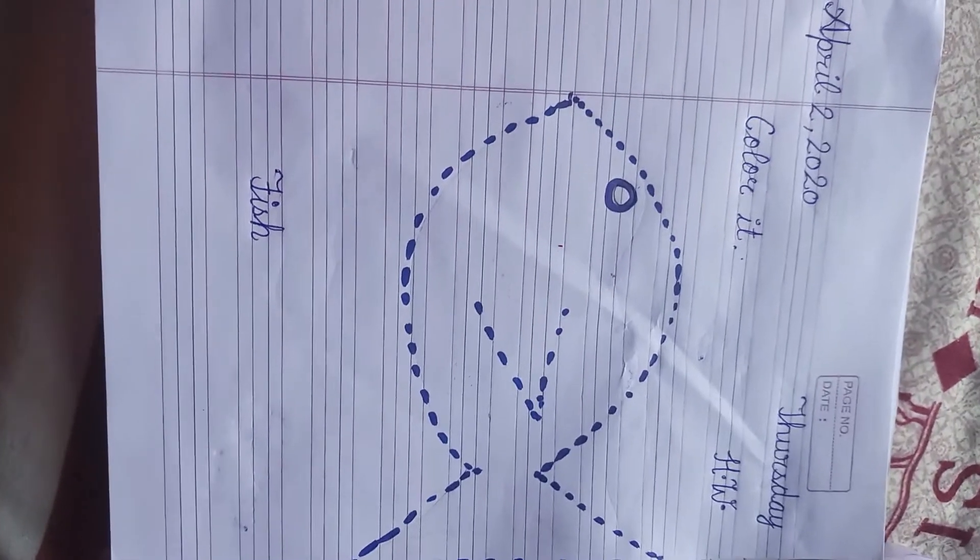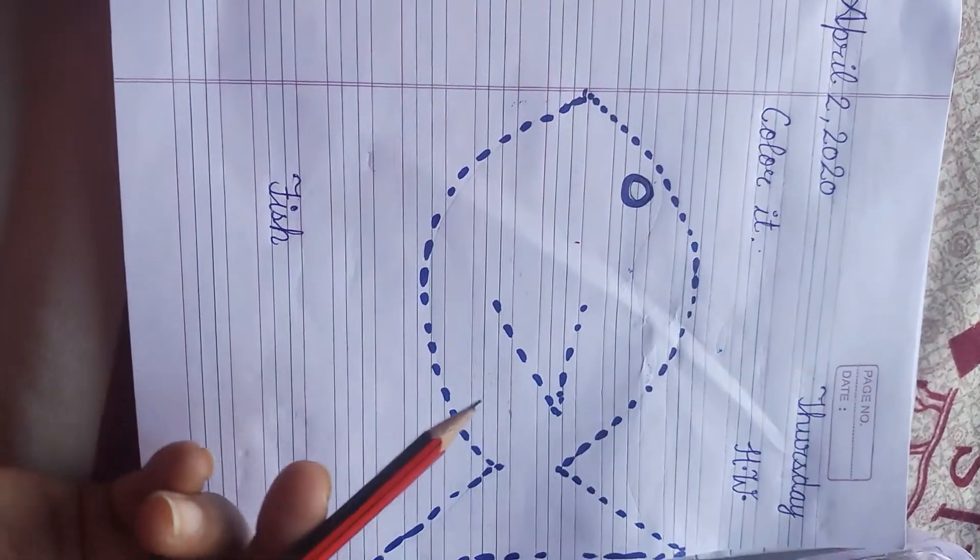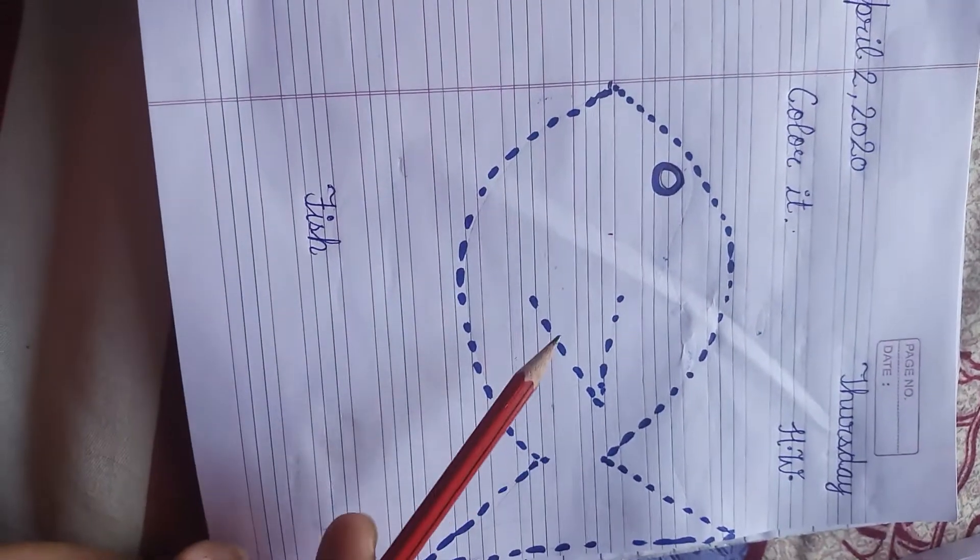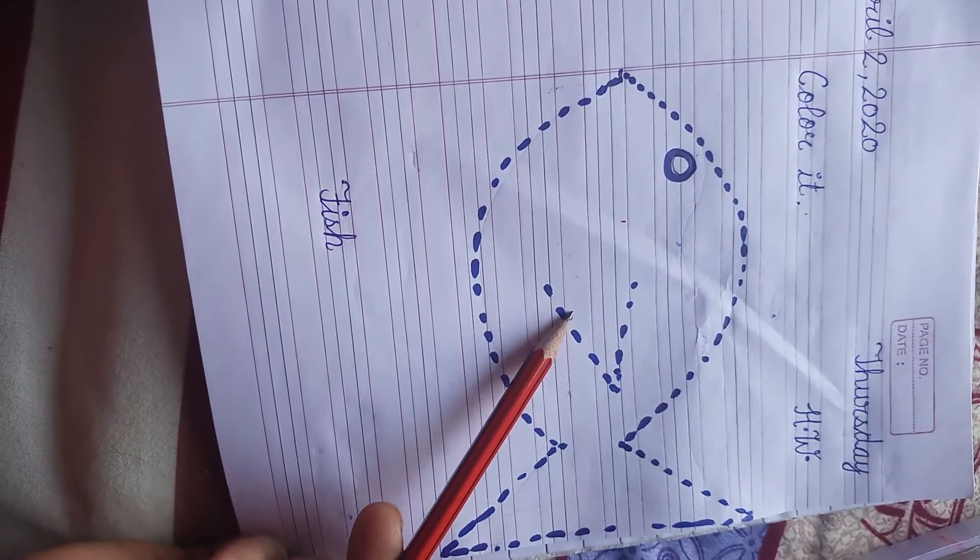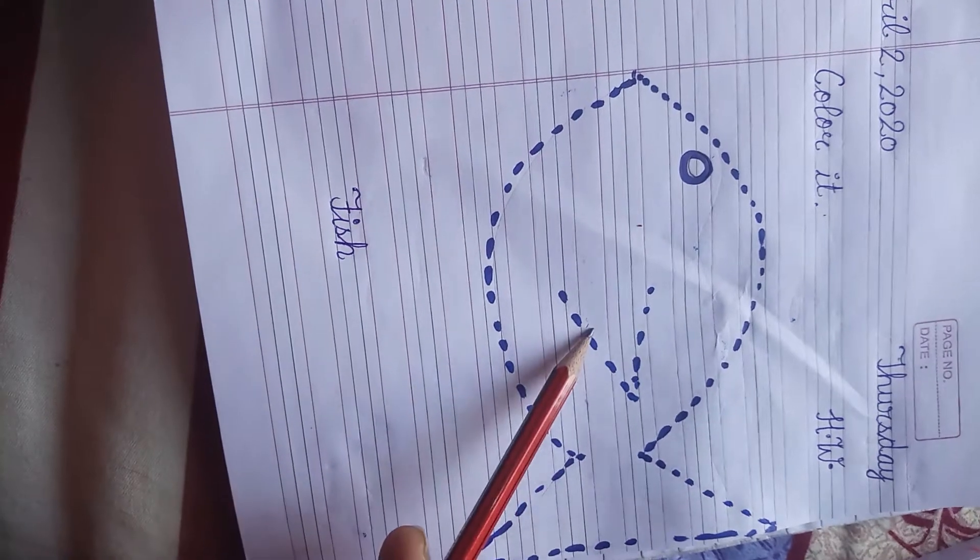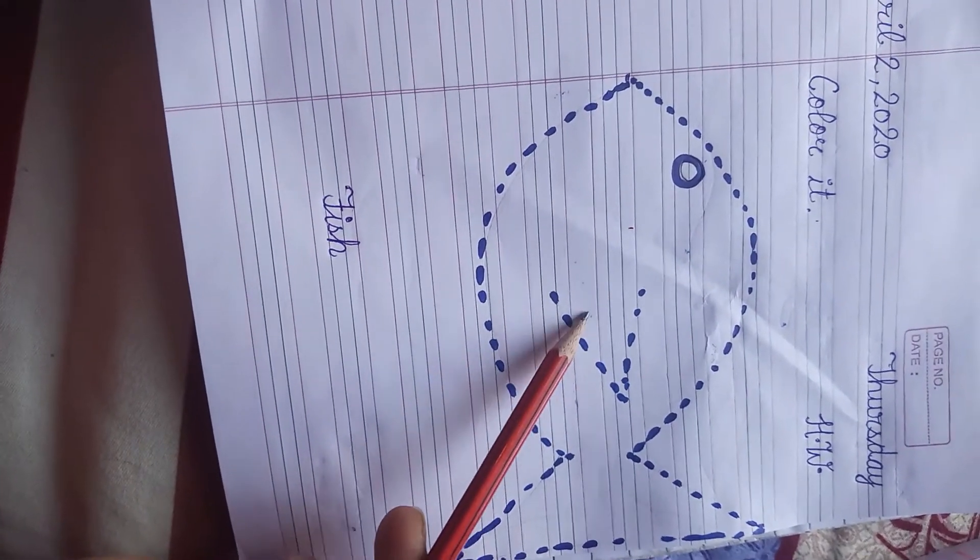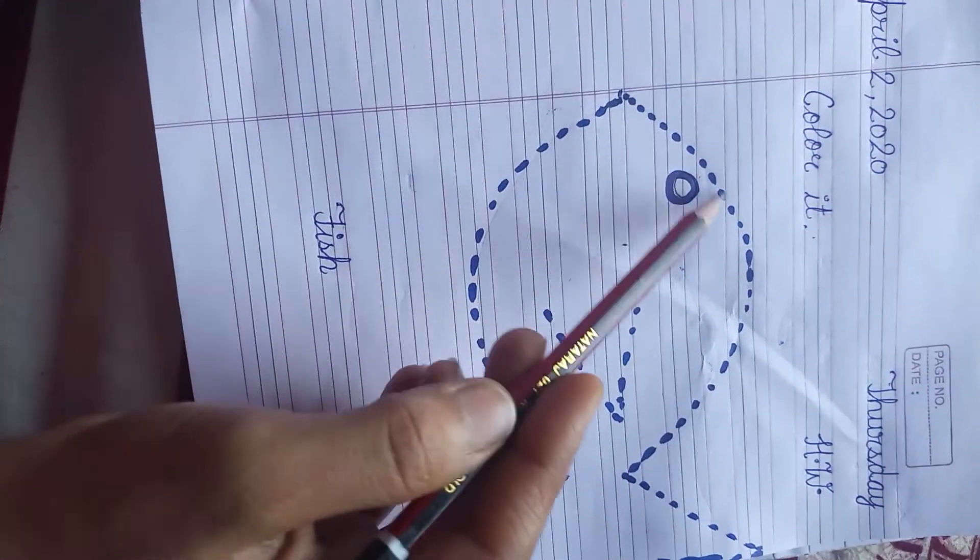Okay, let's have some fun with colors. Let me know what figure is this? Yes, this is a fish but in dotted line.